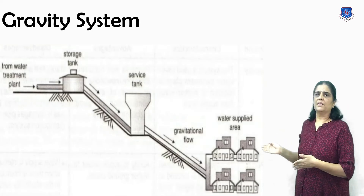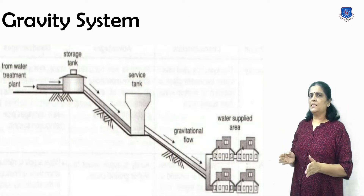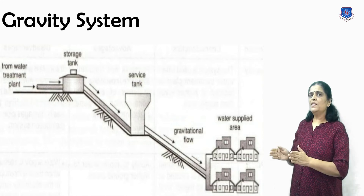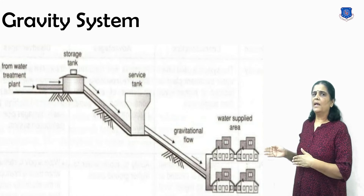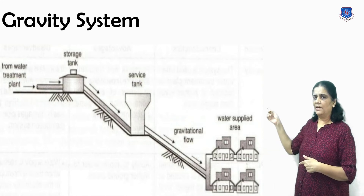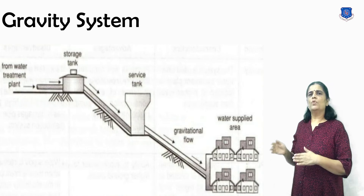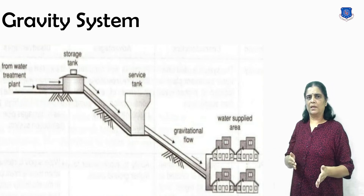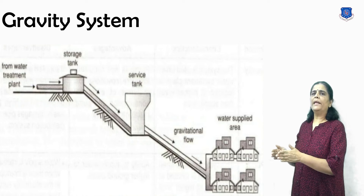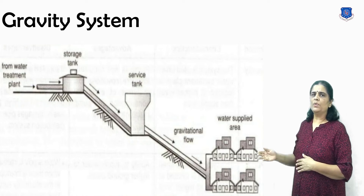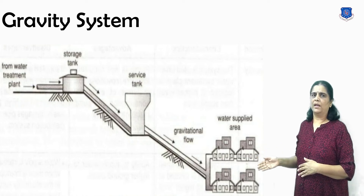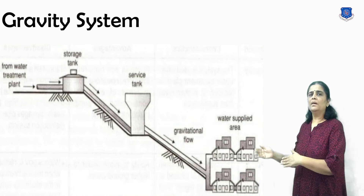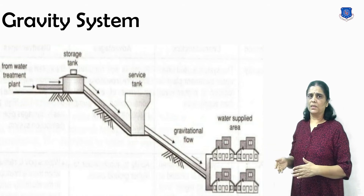First, the gravity system. As you can see in the figure, this system is suitable when the source of supply is at a sufficient height. This system is the most reliable and economical distribution system. The water pressure available at the consumer end is just the minimum required; the remaining pressure is consumed in friction and other losses.